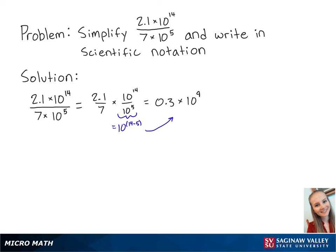We need to write this in scientific notation, which means we need to move the decimal to the right one time. So this is equal to 3 times 10 to the negative 1 times 10 to the 9th,